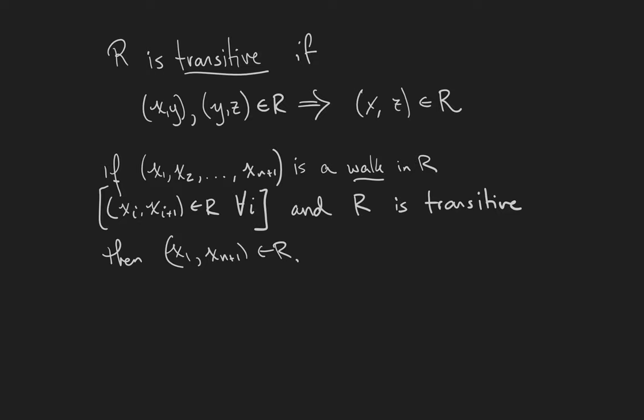Finally, we say that R is transitive if any time X is related to Y and Y is related to Z, that means that X is related to Z. You've seen this before with both equality and logical implication. Another useful definition of transitivity is that if the sequence X1, X2, ..., Xn+1 is a walk in R, meaning that each successive term in the sequence is related to the next one, R is transitive if the endpoints of the walk are also in the relation, and that's true for all of the walks in the relation.